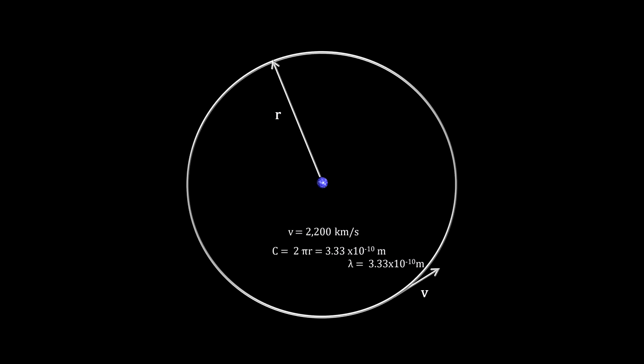In other words, the wavelength of the electron is exactly the length of one revolution. This would create a standing wave.